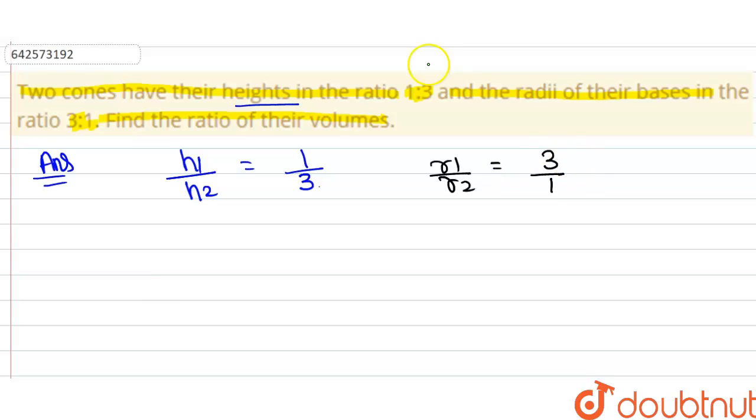Then we have to find out the ratios of their volume. So the formula for volume of cone is equals to 1 by 3 pi r² h.